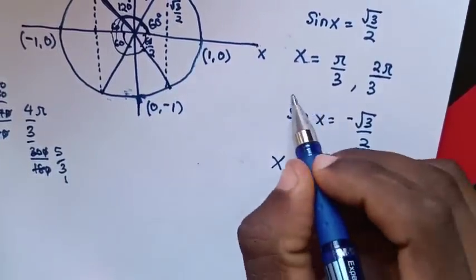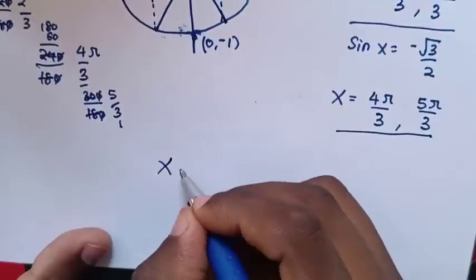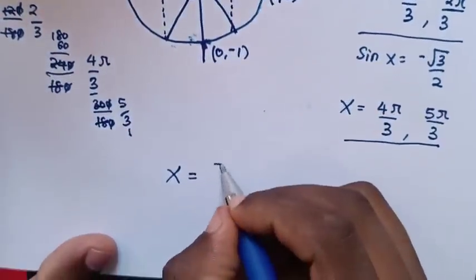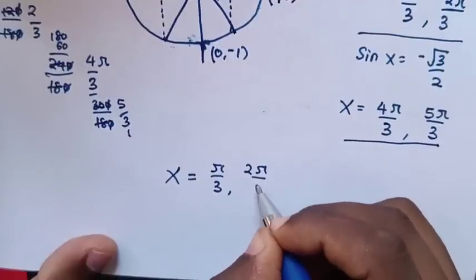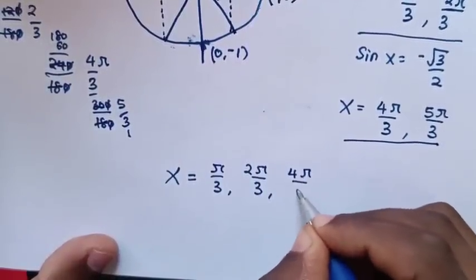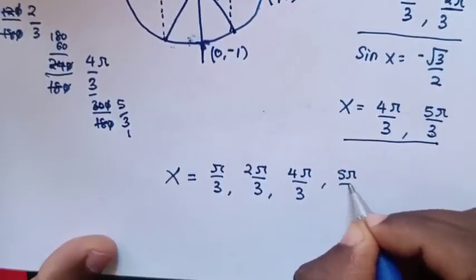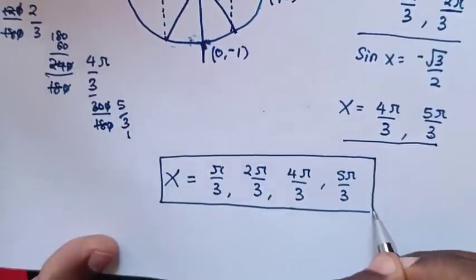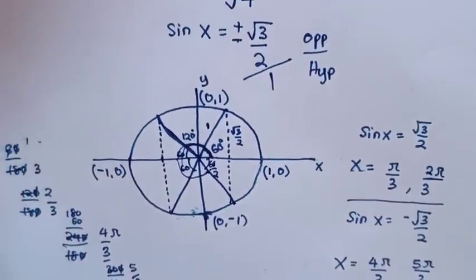Therefore, the values of x between 0 and 2 pi are: x equals pi over 3, 2 pi over 3, 4 pi over 3, and 5 pi over 3. This is the final answer. Don't forget these steps.